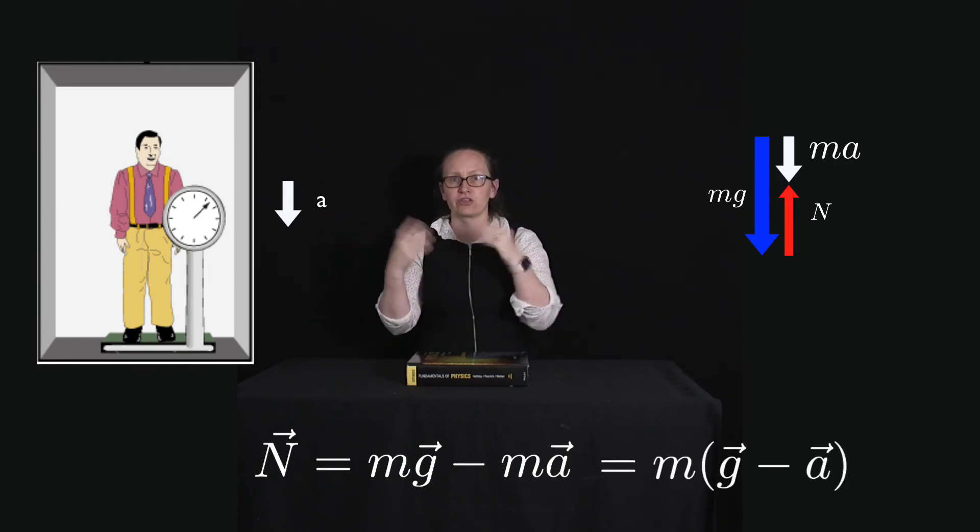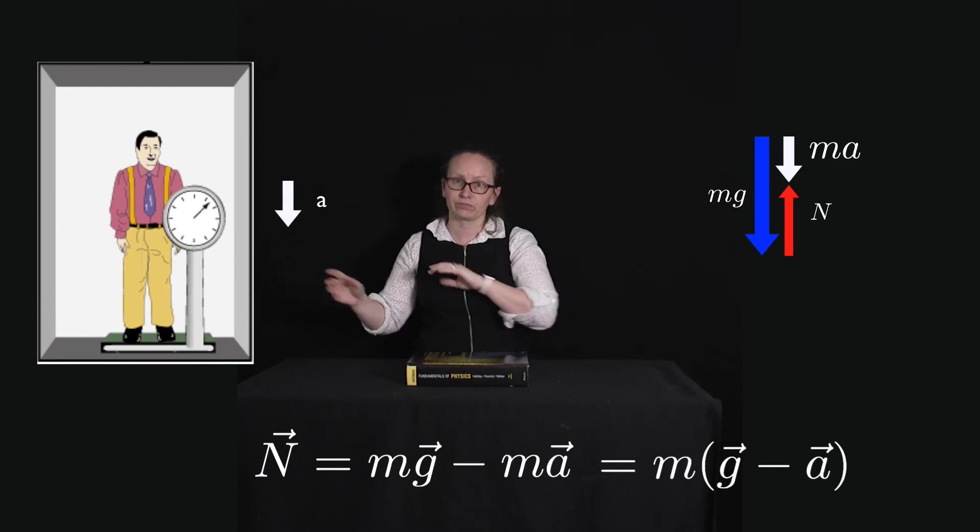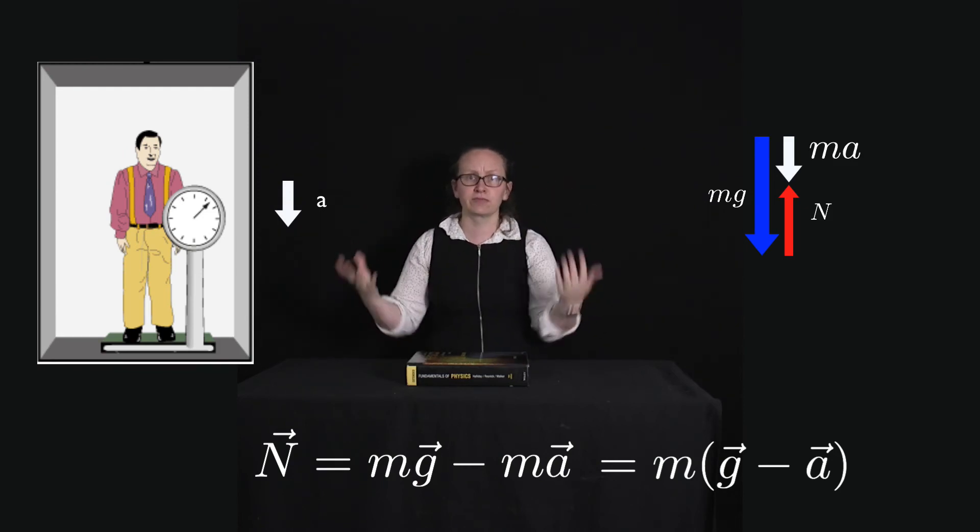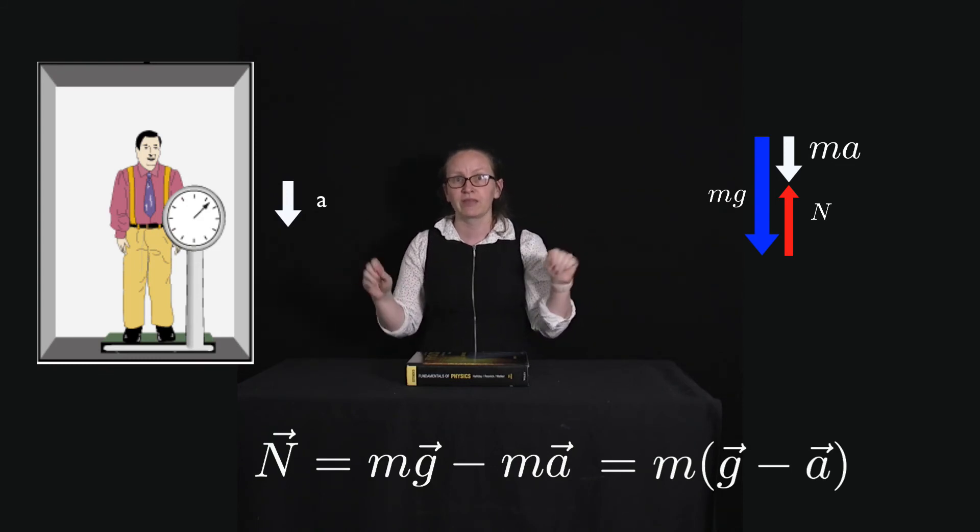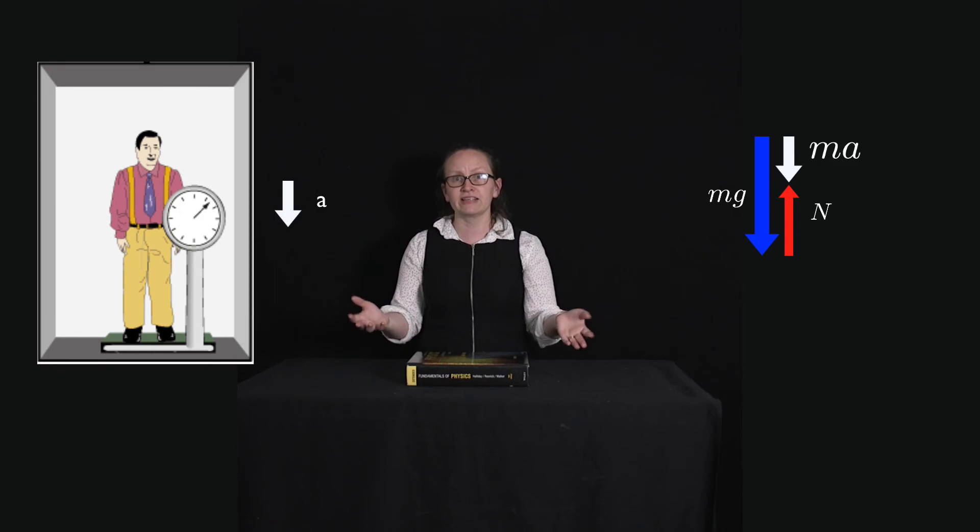Or we can pull the m out and so the normal force is equal to m times (g - a). So this is smaller than what it would be in a stationary lift which is just equal to mg. And this is why you feel lighter when the lift accelerates downwards.